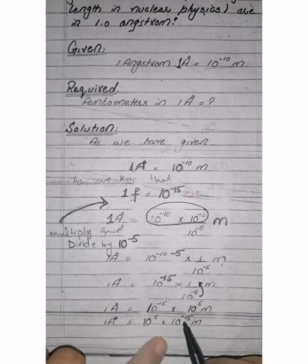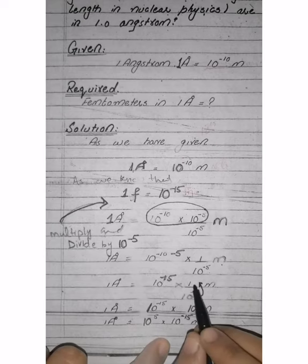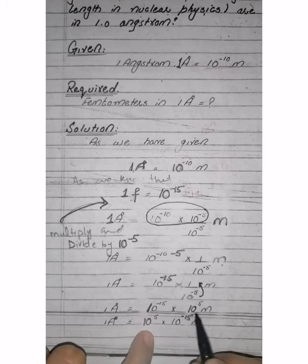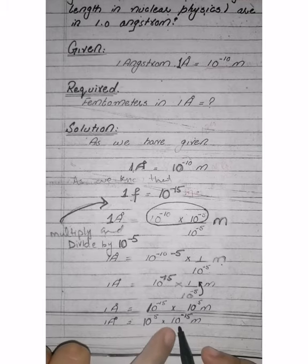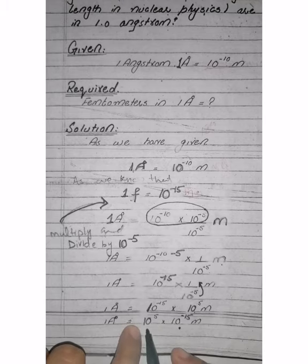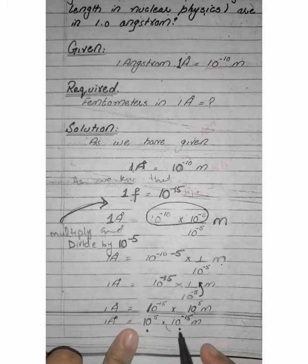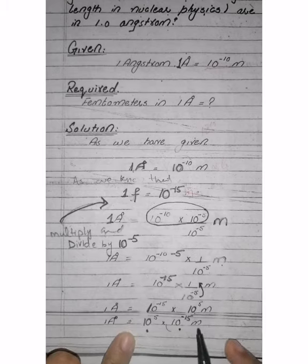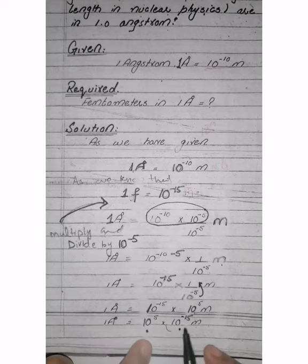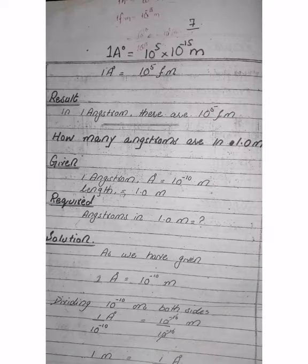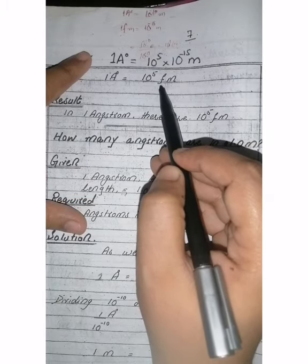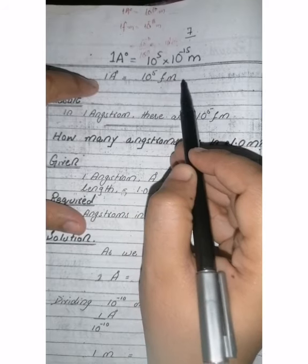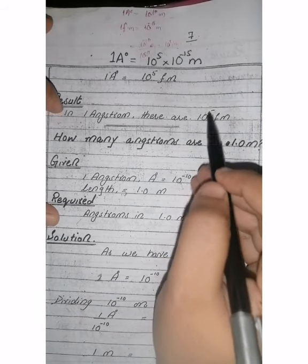We take 10 raised to the power of minus 5 from the denominator to the numerator, so the negative becomes plus 5. Therefore 10 raised to the power of minus 15 into 10 raised to the power of plus 5 meters. Now replacing 10 raised to the power of minus 15 with the femto prefix, one angstrom is equal to 10 raised to the power of 5 femtometers.